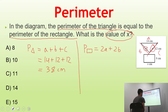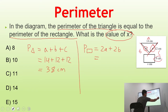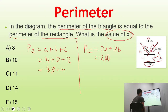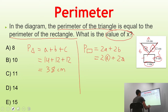Now let's work on the rectangle. The perimeter of the rectangle is 2A plus 2B, and we're given one side of 8 centimeters and the other side is X centimeters. Since A is 8, we substitute to get 2 times 8, plus 2X. Simplifying, 2 times 8 equals 16, so we have 16 plus 2X.